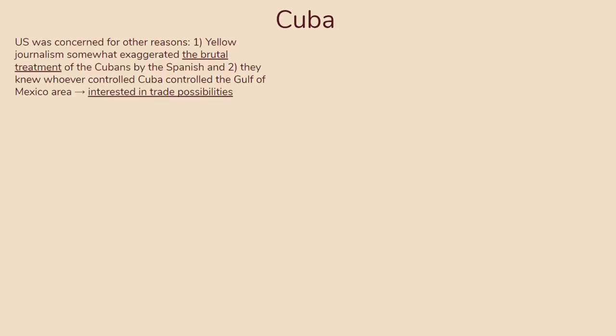The US is not interfering in Cuban affairs simply for imperialist reasons — they do have some genuine concern. There are two main reasons for involvement. One is yellow journalism, basically exaggerated journalism to elicit a response, which exaggerated the brutal treatment of Cubans by the Spanish — though they were definitely brutally treated, as seen with General 'Butcher' Weyler. The second reason is that the US knew whoever controlled Cuba controlled the Gulf of Mexico, so they were interested in trade possibilities.